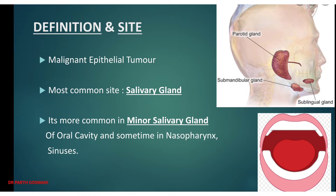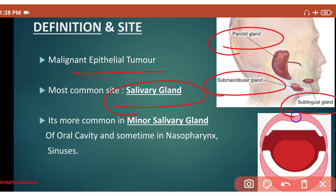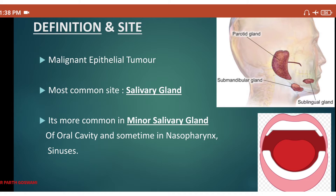Adenoid cystic carcinoma is an epithelial malignancy. The common site of occurrence is the salivary gland. We have major salivary glands — parotid, submandibular, and sublingual — and minor salivary glands located in the oropharynx, nasopharynx, sinus, and tongue. This tumor is more common in minor salivary glands compared to major salivary glands.